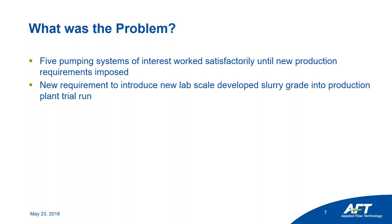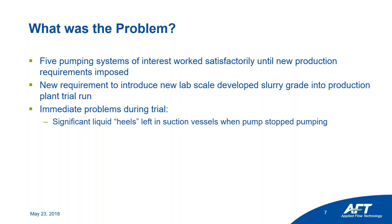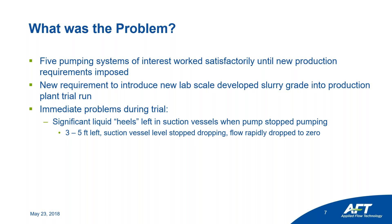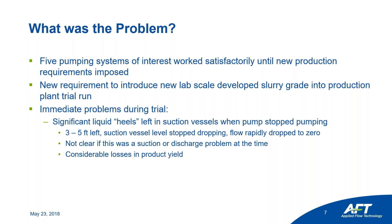The problems they experienced included significant liquid levels left in the suction vessels — three to five feet high — when the pumps stopped working. The suction vessel liquid levels stopped dropping, the fluid just sat there, and flow rate through the piping system went to zero. They weren't sure if the problem was on the suction side or the discharge side. Overall, the amounts of liquid left over caused significant losses in product yields, and their flow rates were not adequate for production demands.